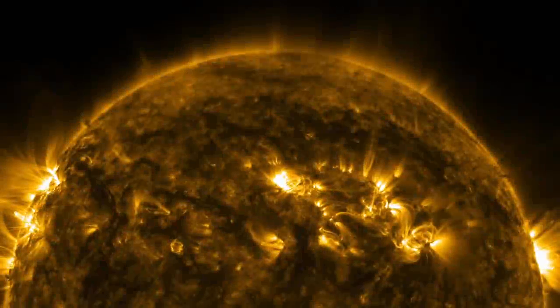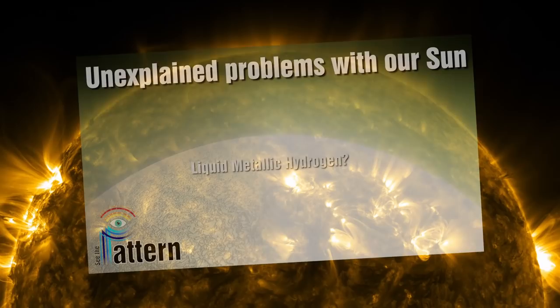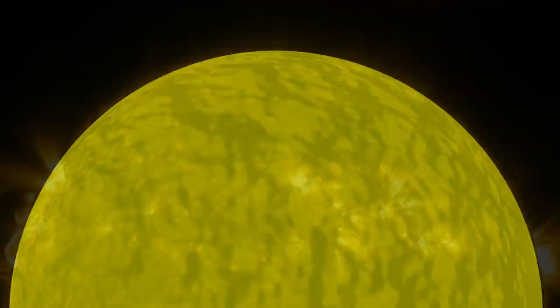In the first part of this series we looked at some of the unexplained problems of the sun. The basic premise of Robitaille's model is that most of these problems will be eliminated if we consider the sun to have a liquid surface.